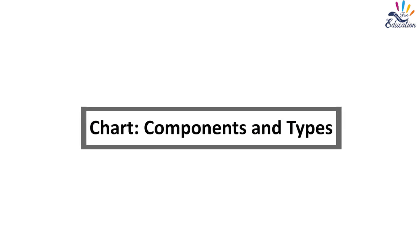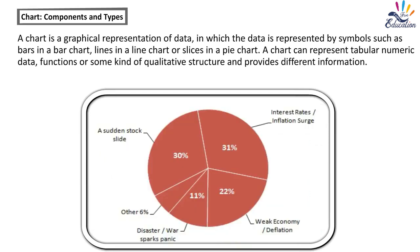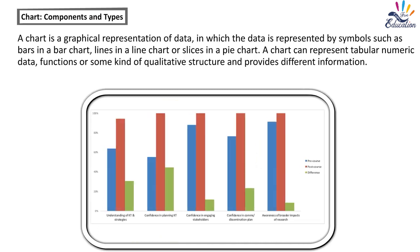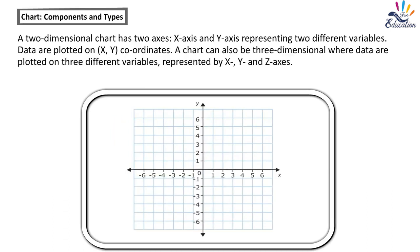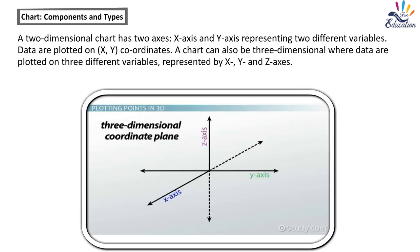Chart Components and Types: A chart is a graphical representation of data in which the data is represented by symbols such as bars in a bar chart, lines in a line chart, or slices in a pie chart. A chart can represent tabular numeric data, functions, or qualitative structure. A two-dimensional chart has two axes — x-axis and y-axis — representing two different variables, and data are plotted on x and y coordinates. A chart can also be three-dimensional, where data are plotted on three variables represented by x, y, and z axes.